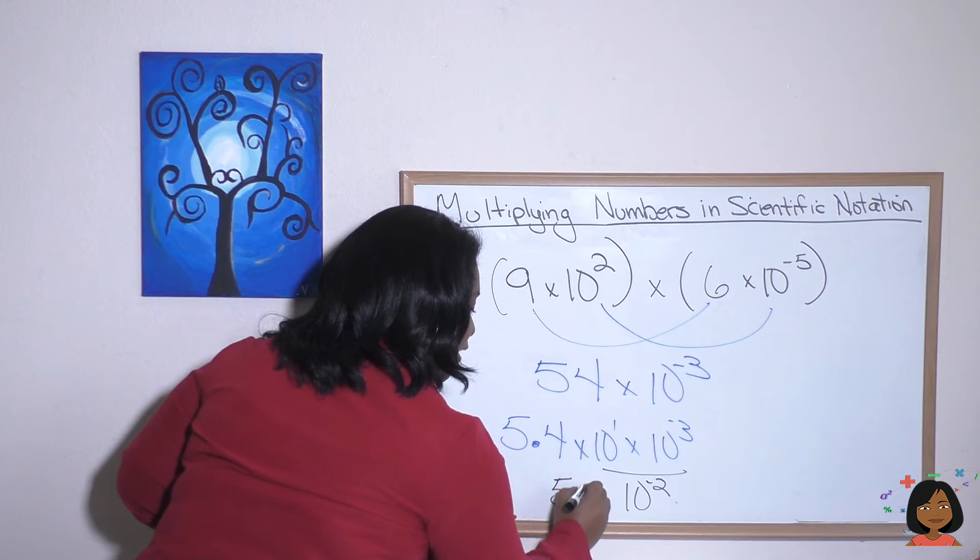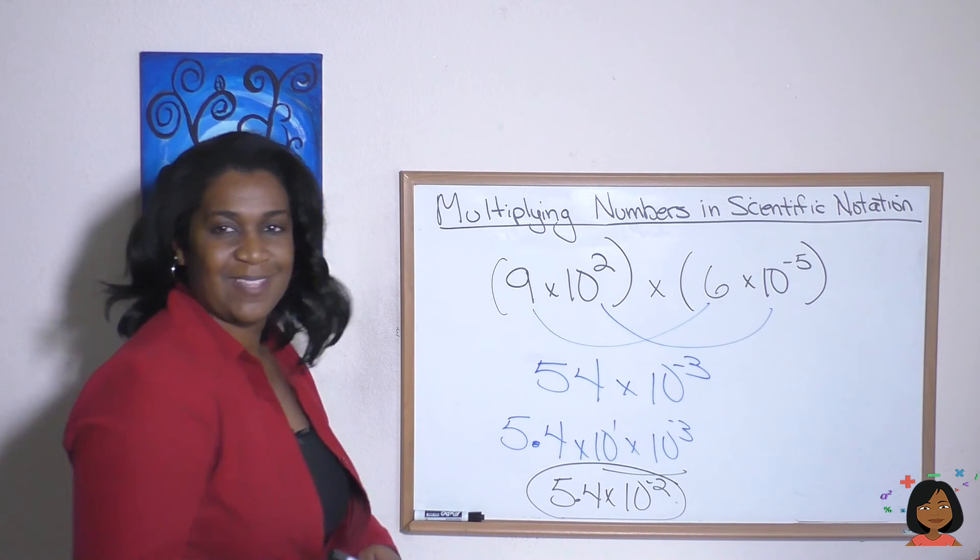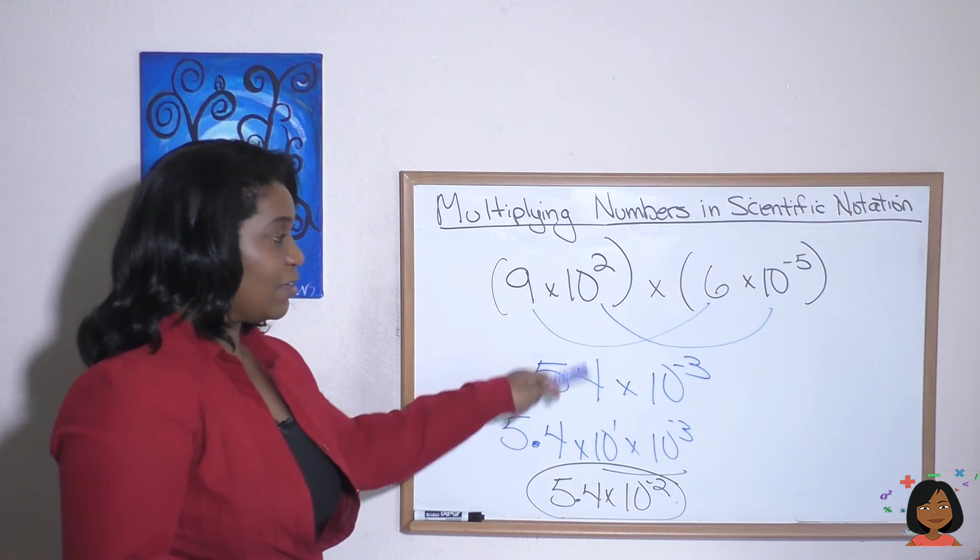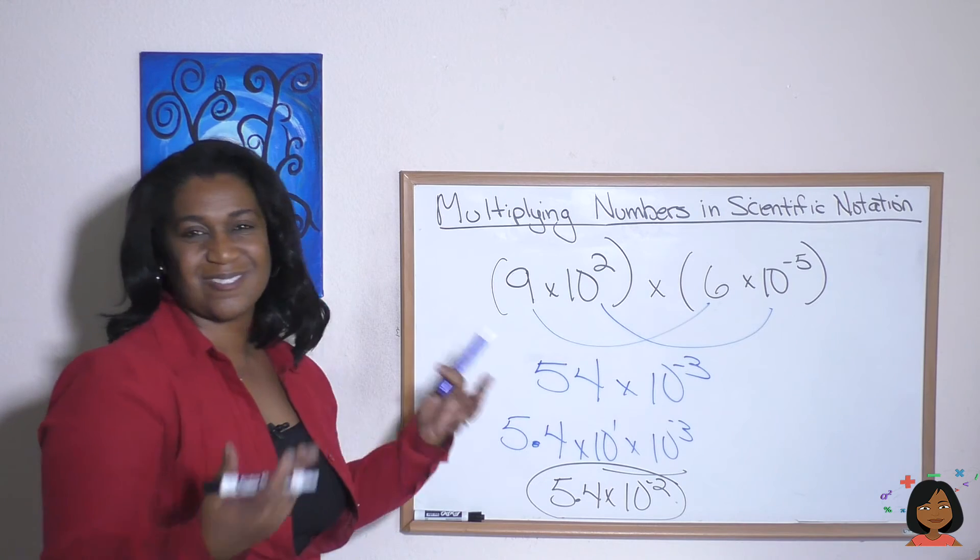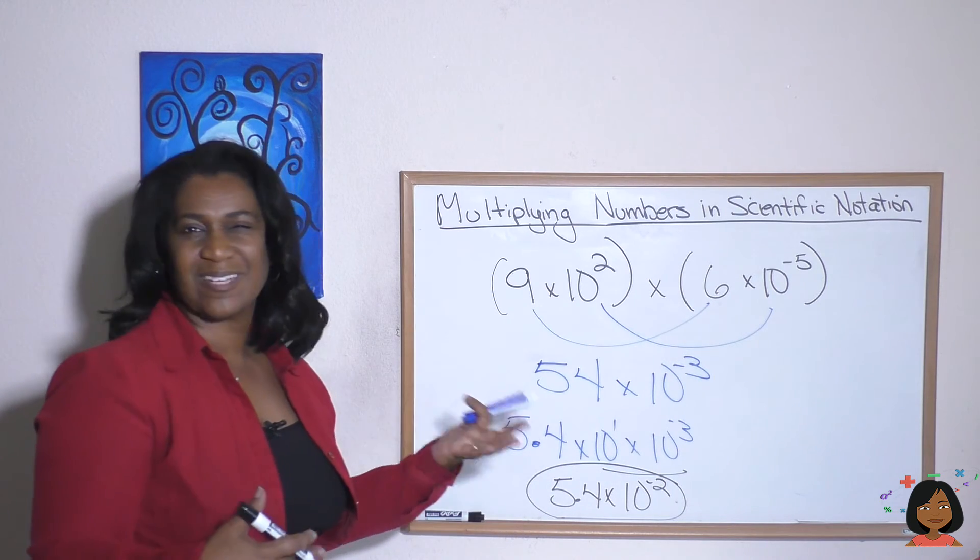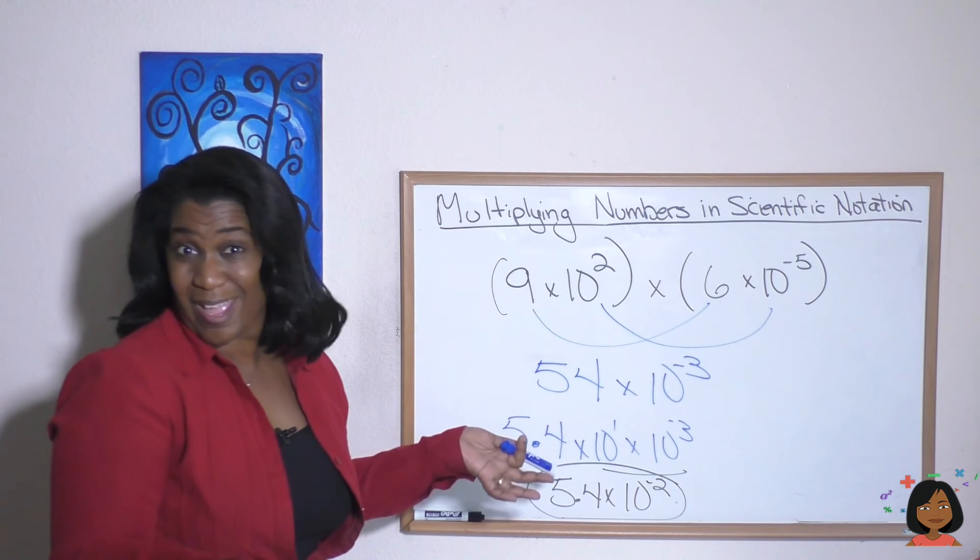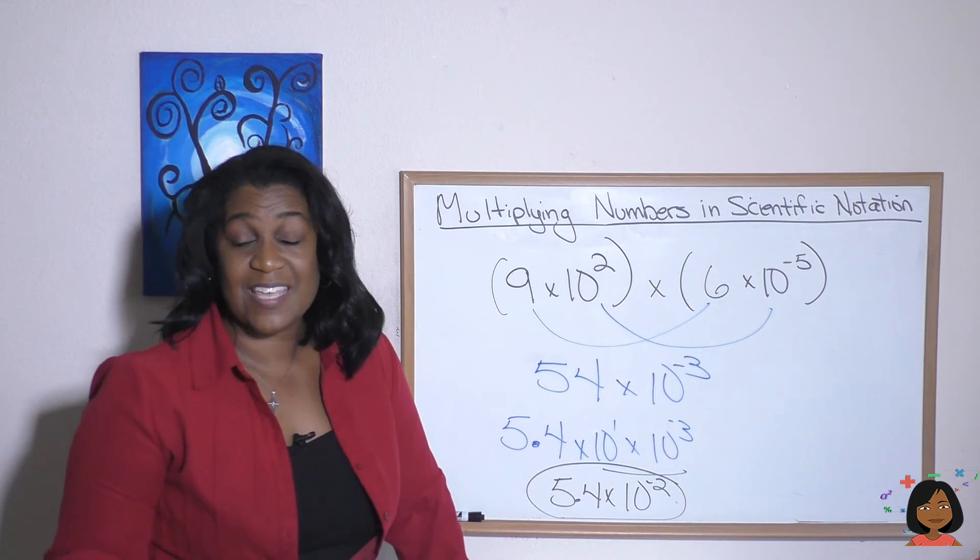And then we still have our 5.4 right here. This is your answer. So again, here we handle our negative exponents. We're still just adding exponents. So if you have a negative, just go ahead and add your negative. And that's it.